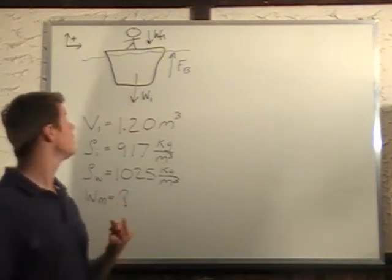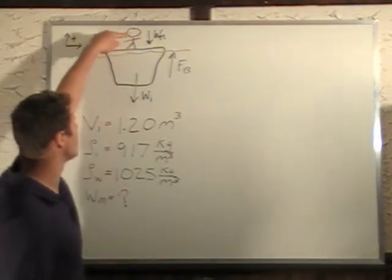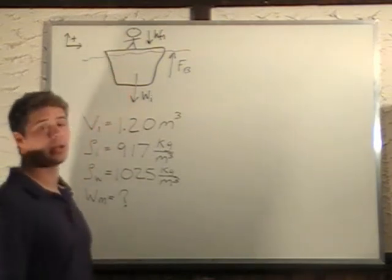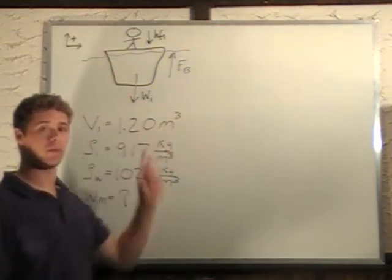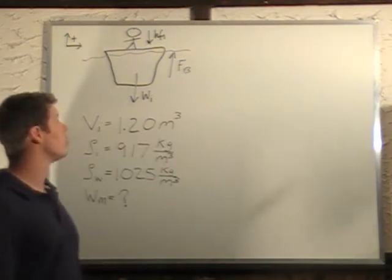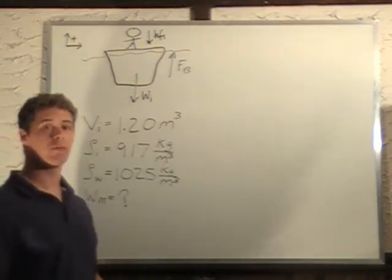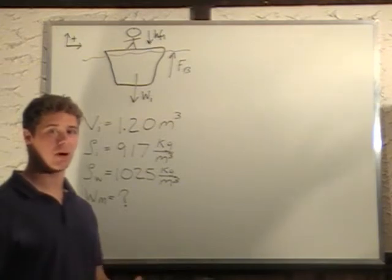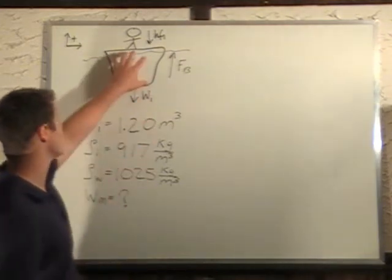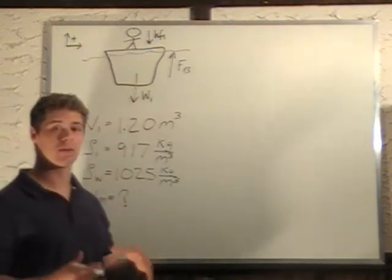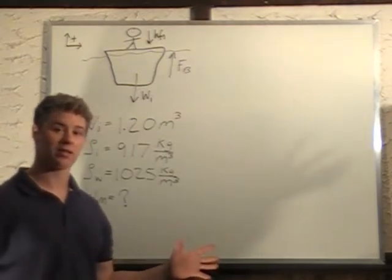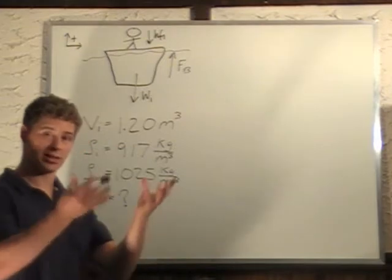So we have three forces acting: the weight of the man acting downward, the weight of the iceberg acting downward, and the buoyant force acting upward. Now it's important to know what the buoyant force is. The buoyant force is equal to the weight of the liquid that is displaced by an object. So we have this iceberg that's going to be completely submerged underwater, and the amount of water that it pushes out of the way is going to be equivalent to its buoyancy force.